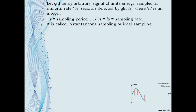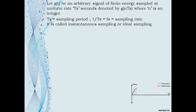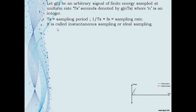Let G(t) be an arbitrary signal of finite energy sampled at uniform rate Ts seconds, denoted by G(nTs), where n is an integer and Ts is the sampling period. 1/Ts = Fs is the sampling rate. It is called instantaneous sampling or ideal sampling because the samples are obtained only at that particular instant of time.